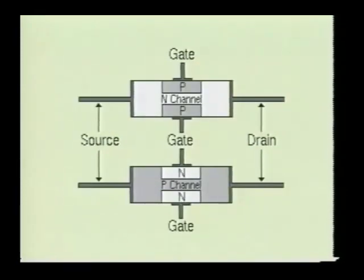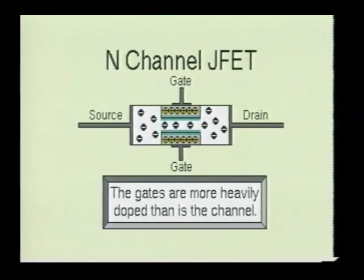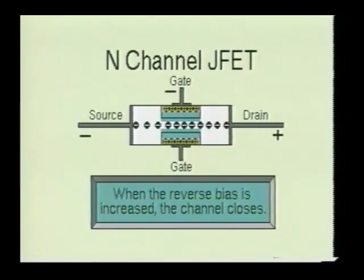There are two types of JFET devices: N-channel and P-channel. The bar of semiconductor material placed between the gates is referred to as the channel, and the ends of the channel are designated as the drain and source. The channel is more lightly doped than the gate sections, causing the depletion region to penetrate deep into the channel when the device is reverse biased. Since the depletion region is depleted of majority charge carriers, it behaves as an insulator. When the reverse bias is increased, the channel is made more narrow, resulting in an increase of the effective resistance of the JFET device.